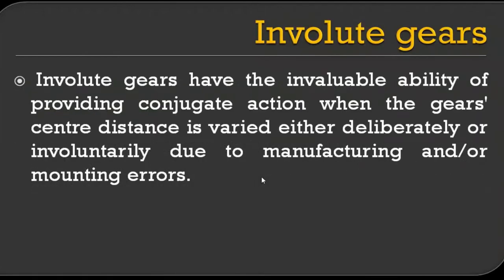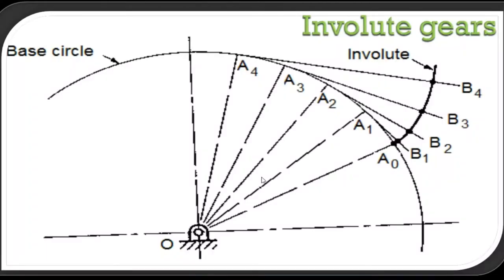Involute gears have the invaluable ability of providing conjugate action when the gear center distance is varied, either deliberately or involuntarily due to manufacturing or mounting errors. This is a specific feature of adjusting itself to mounting errors — that is the advantage of involute gears. This is the representation of the involute profile. This is the base circle of the gear tooth, and this is how we can draw the involute by winding or unwinding the thread around this circle.